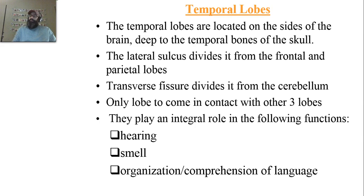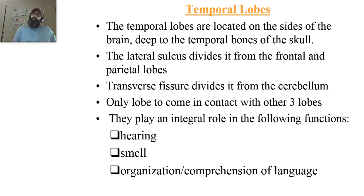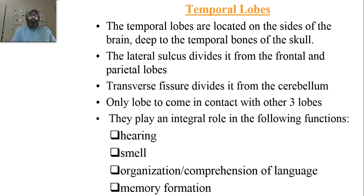You also have the organization and comprehension of language, which is combined with two other centers: the auditory cortex and Broca's area. We're going to add a third one — Wernicke's area — and all three work collaboratively together to form comprehensive language, both understanding what's coming in and projecting comprehensive speech going out. You also have a little bit of memory formation, but we're going to save that for part four F.